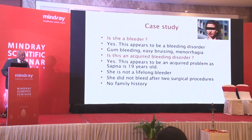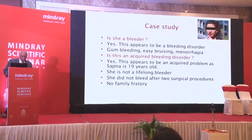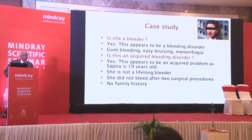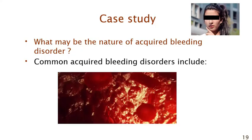The next question: is this genetic — factors 8, 9, 11, 13, etc. — or is this an acquired bleeding disorder? Again, she has told you the answer. This is an acquired bleeding disorder for the simple reason that she is 19 years old and has not been bleeding all her life. Her menorrhagia is only for the last few months, and she underwent two surgical procedures without ever bleeding. So for all practical purposes, a genetic bleeding disorder is out. Sapna should not go to a dental surgeon, and she has an acquired bleeding disorder.